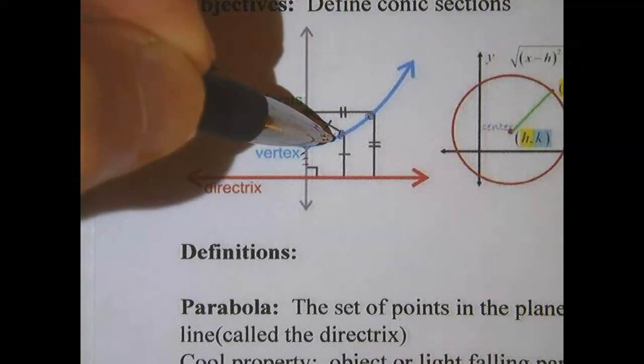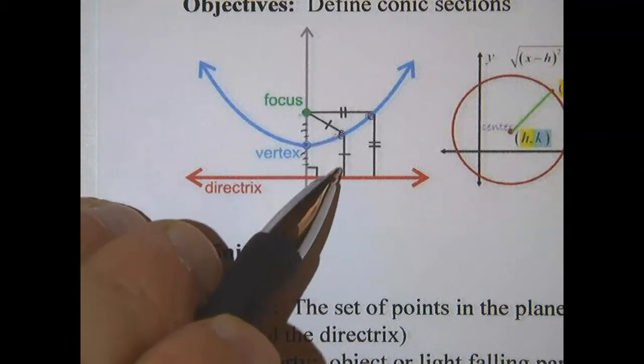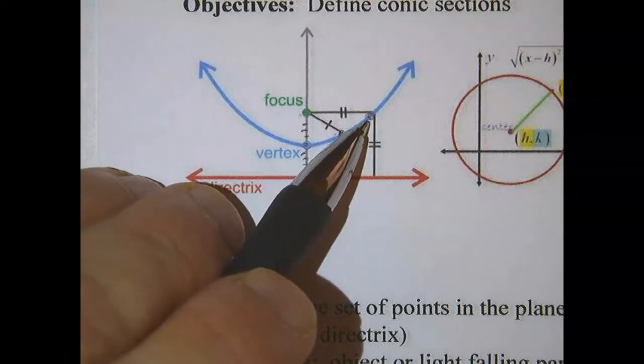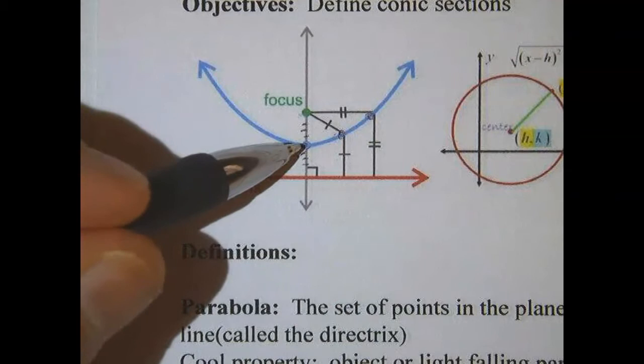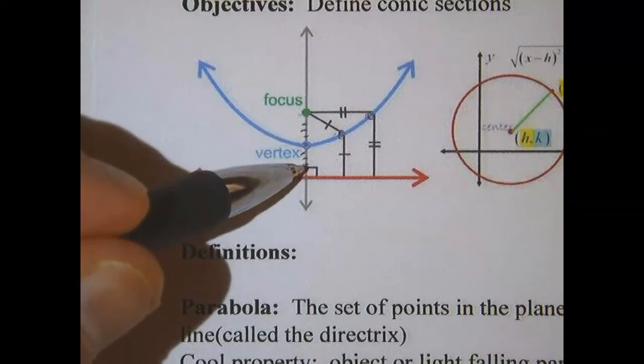So if you take this point, for example, the distance from that point to the focus equals the distance from that point to the line. If you take this point, same distance from the focus to the line. If you even take the vertex, the vertex should always be halfway between the focus and the line, and this one is.